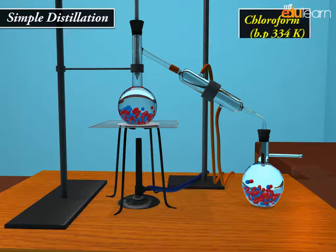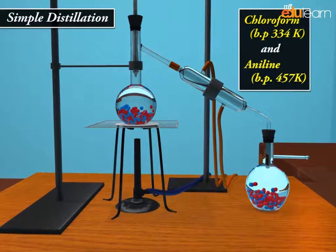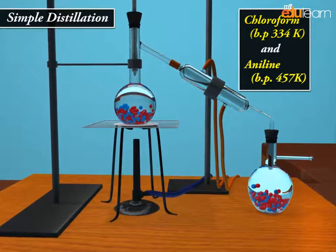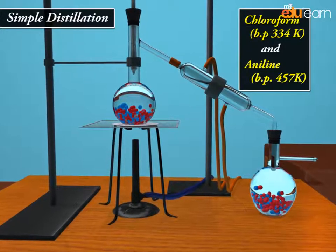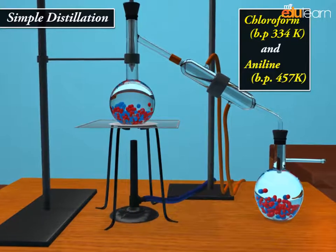Chloroform, boiling point 334 Kelvin, and aniline, boiling point 457 Kelvin, are easily separated by the technique of distillation.